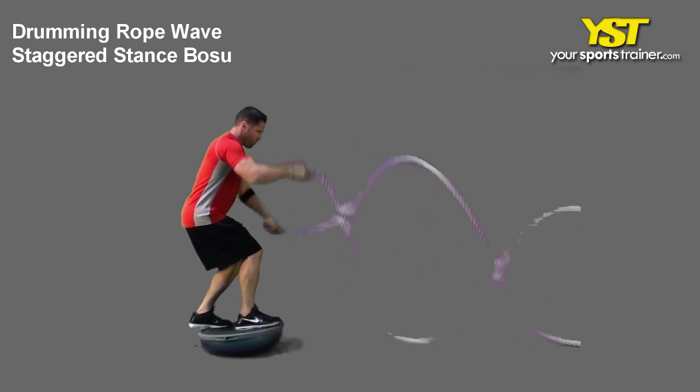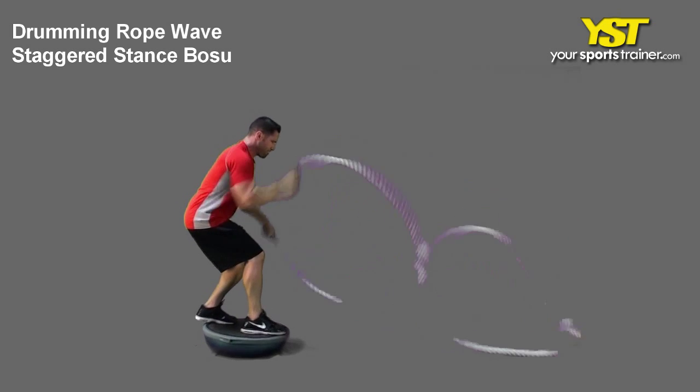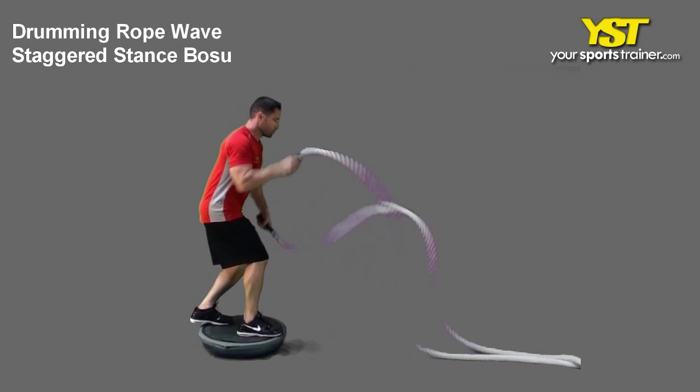Carefully stand on the platform of the Bosu ball, legs about shoulder width apart, but one leg in front of the other staggered. Stand upright with rope ends grasped at each side.